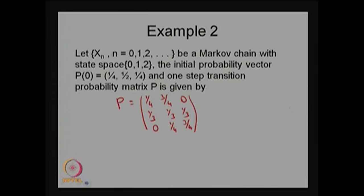Now we move to the next example. Xn is a discrete-time Markov chain — by default, always time-homogeneous — with state space {0, 1, 2}. The initial probability vector P0 is [1/4, 1/2, 1/4], which sums to 1. So the system starts from state 0 with probability 1/4, state 1 with probability 1/2, and state 2 with probability 1/4.